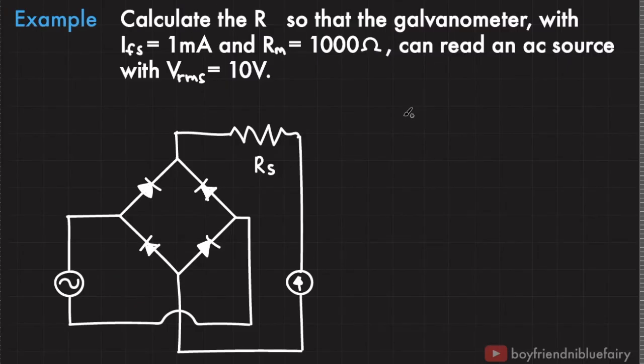As an example, calculate the multiplier resistance so that the galvanometer with full-scale deflection current of 1 mA and meter resistance of 1,000 ohms can read an AC source with root mean squared voltage of 10 volts. Let me rewrite the equation for the multiplier resistance in terms of sensitivity.